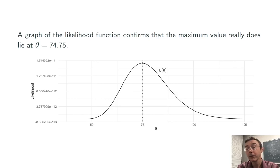We can confirm that this is a maximum for the likelihood function visually. Here, I've drawn a plot of that likelihood function, along with a vertical dotted line showing the value theta equals 74.75, the maximum likelihood estimator in this case.